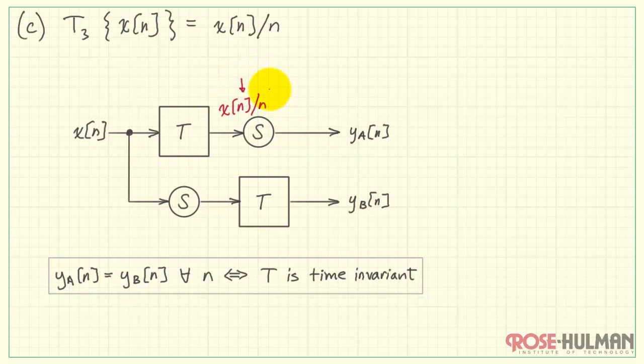And we look for each expression involving our time index n, and then subtract n0 from each. For the second path, we do X of n minus n0 and apply that to our system.